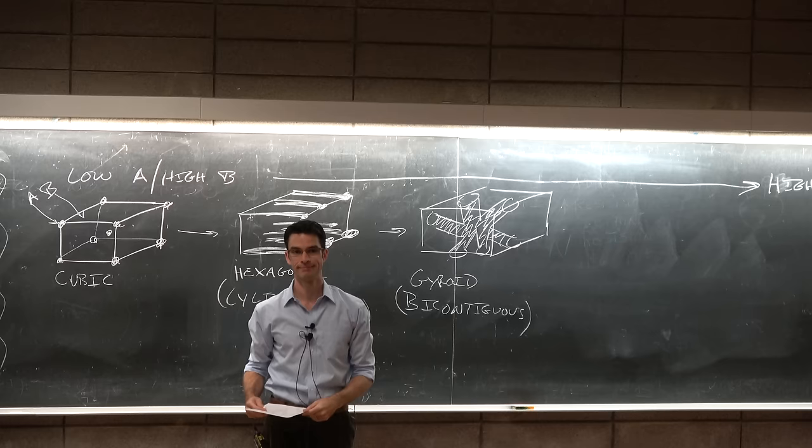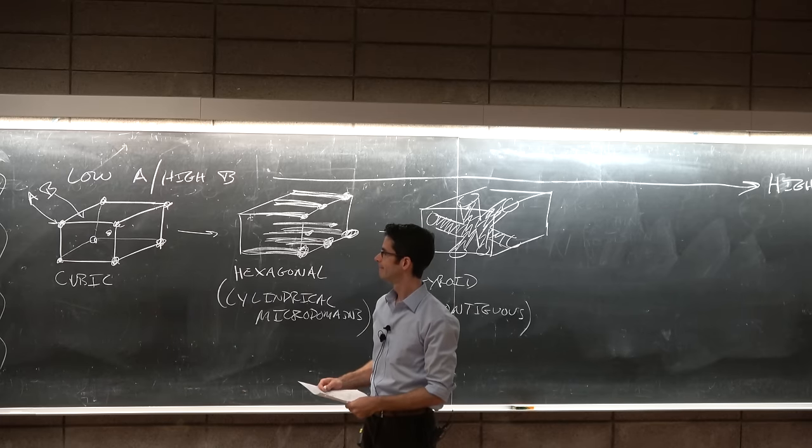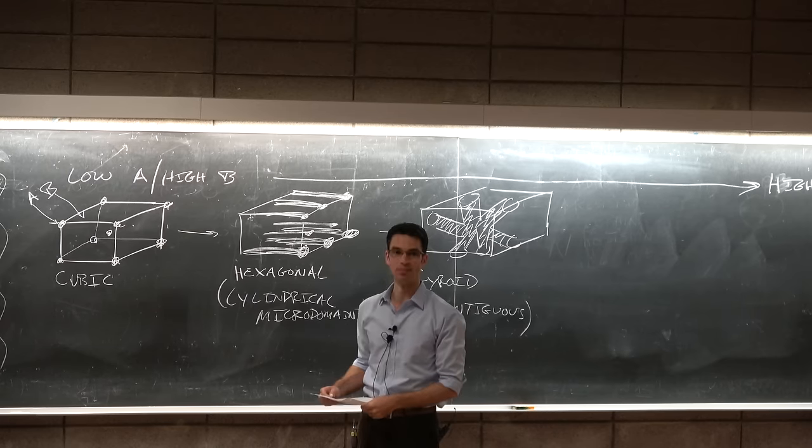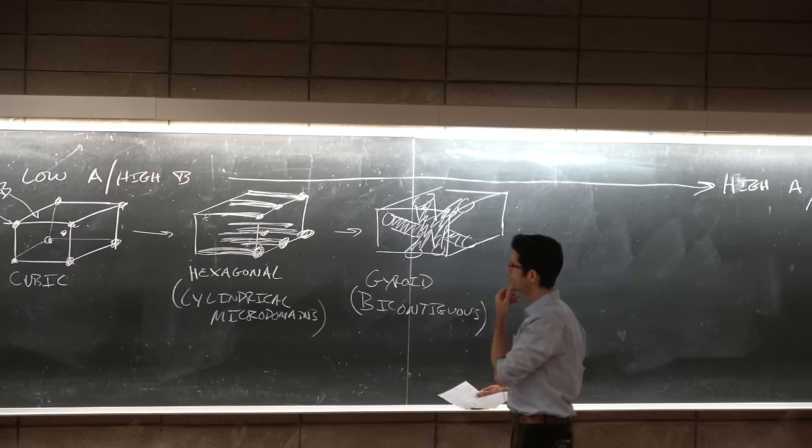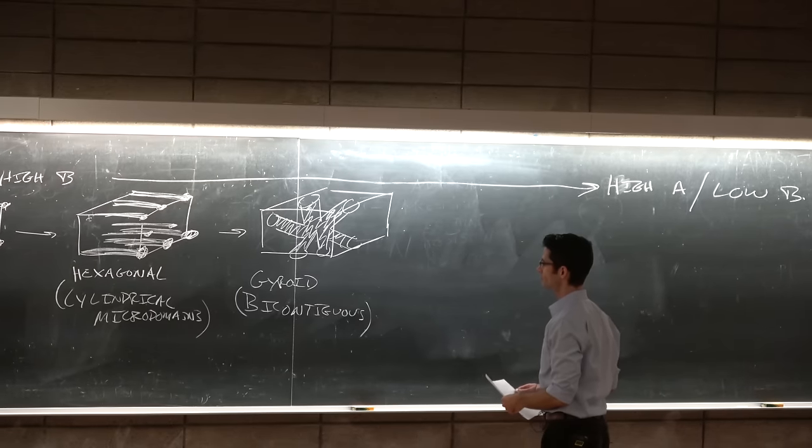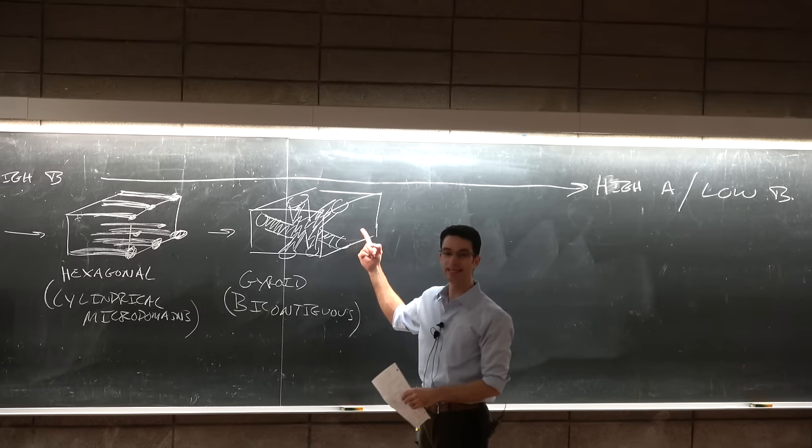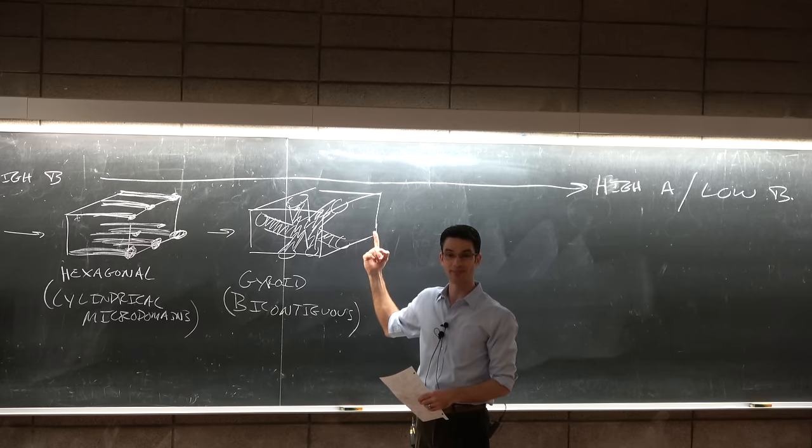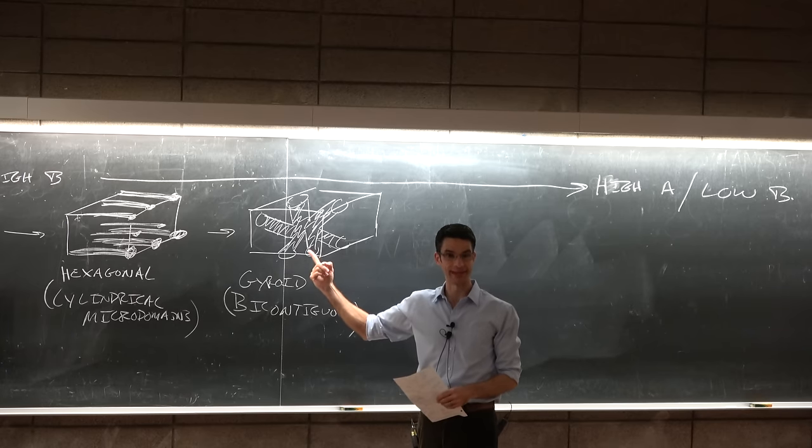The gyroid structure is the only one that's bicontiguous, which means that if you have repeating unit cells everywhere, you can get from anywhere in the A block to anywhere else in the A block without crossing through any of the B blocks. Is that body centered cubic? Yes, this is body centered cubic. And you can conversely get anywhere in the B domain from one block to the next without having to cross over any of the A domains.